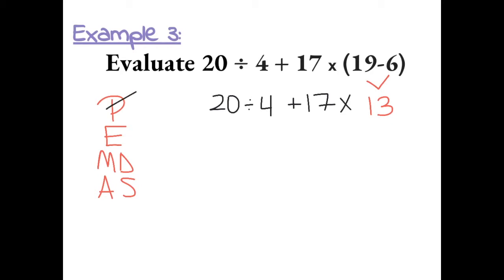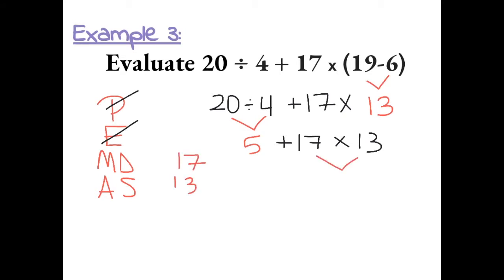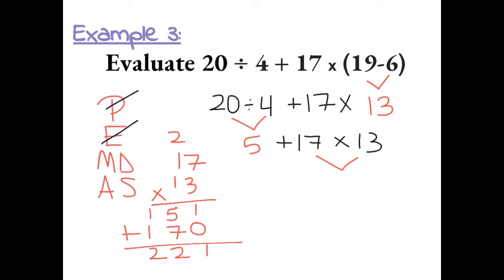We have no exponents in this expression, so we move on to multiplication or division. First, 20 divided by 4 gives us 5. Bring everything else down. We still have multiplication, so we need to do 17 times 13. 7 times 3 gives us 21, carry the 2. 1 times 1 plus 2 more gives us 5, and 1 times 1 is 1. This gives us 221.